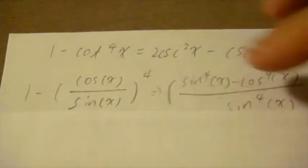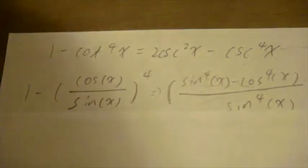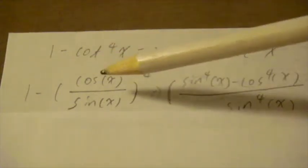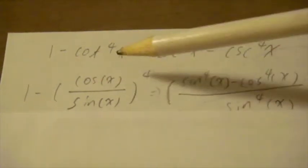So this is my first proof. It's 1 minus cotangent to the 4th x equals 2 cosecant squared x minus cosecant to the 4th x. We're going to start right away. I'm going to do two parts — part one is the left side. I take off the left side, so it becomes 1 minus cotangent to the 4th x.